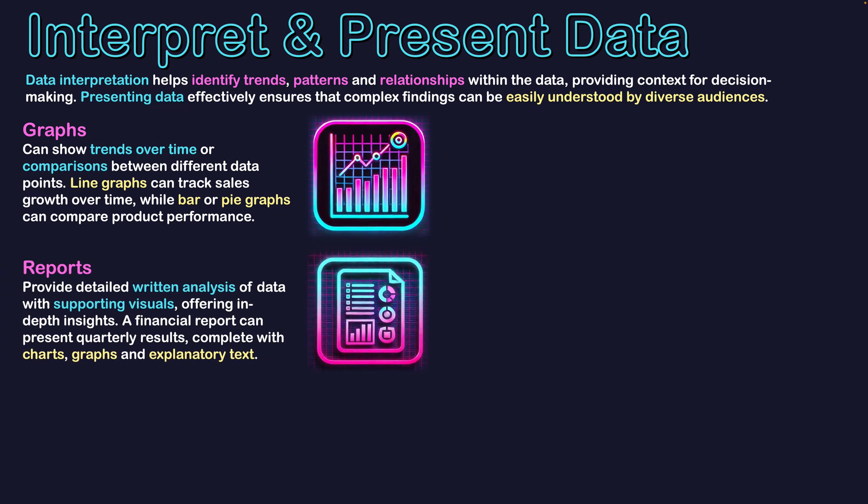The next one is reports. Reports provide detailed written analysis of data with supporting visuals — these can be multiple pages or a single page. We might have a graph within our report, but there is also supporting written analysis talking about what's in the graph. For example, a financial report could present quarterly results for a specific business, supported by charts and graphs and explanatory text talking about what the finances are looking like.